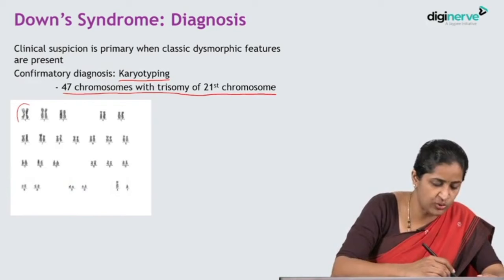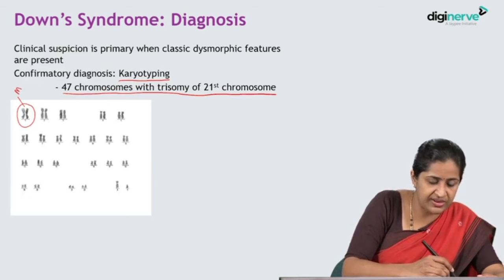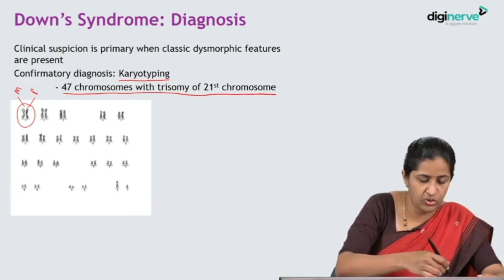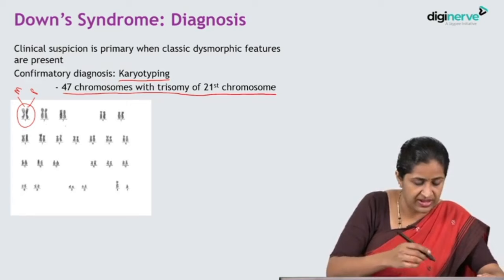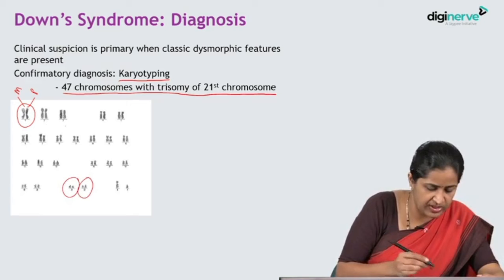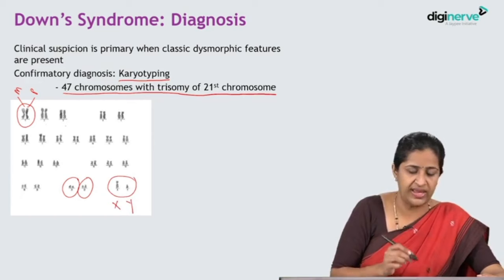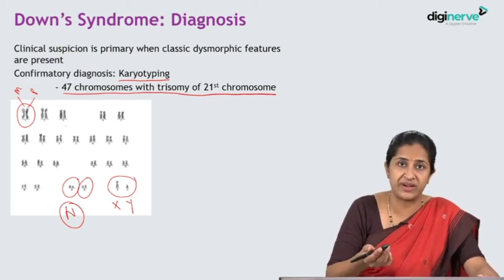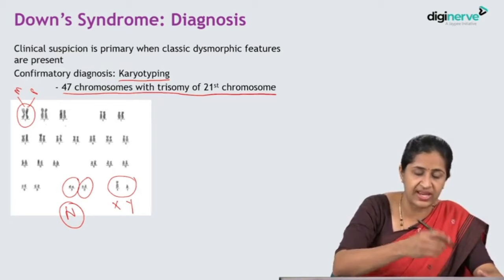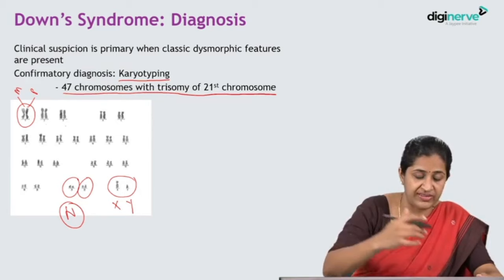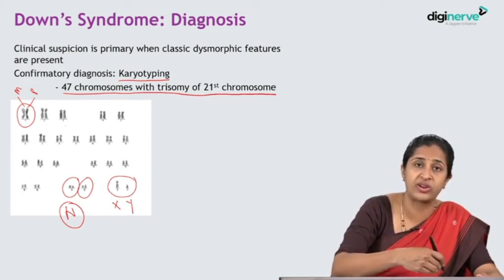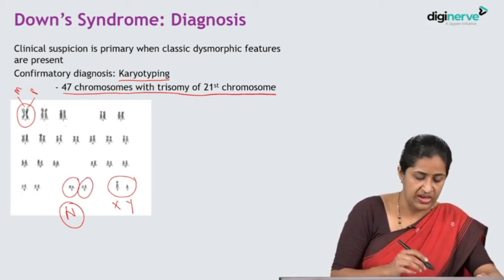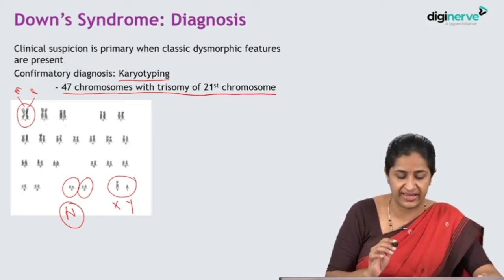Looking at a normal karyotype: there are two copies of each chromosome — one maternal, one paternal. Chromosomes are numbered and arranged in descending size order. Chromosome 1, 2, 3 are the biggest; chromosomes 21 and 22 are the smallest; and the sex chromosomes are last. In a normal male child's karyotype, you see one X and one Y. This is interpretation of a normal karyotype.